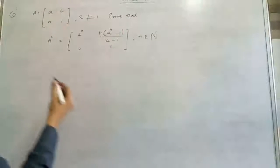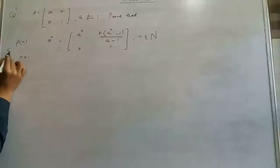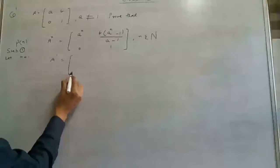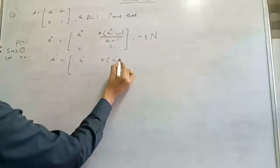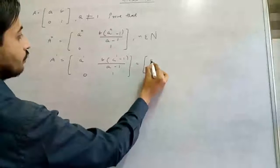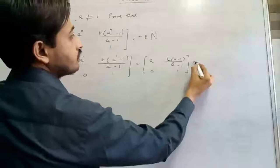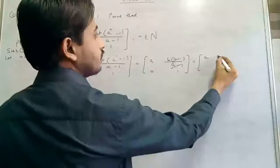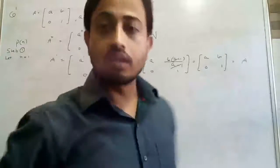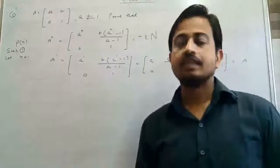The next problem: a matrix has elements A, B, 0, 1 where A is not equal to B. Prove that A to the power n has specific elements, where n belongs to the natural numbers N. This question is based on PMI — the Principle of Mathematical Induction. We follow three steps. Step 1: let n equal 1. We get A^1 as A, B(A^1 minus 1)/(A minus 1), 0, 1, which simplifies to A, B, 0, 1. This equals matrix A, so left hand side equals right hand side.